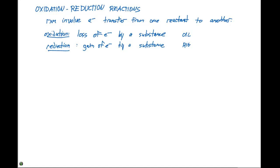We need some way to keep track of all of these electrons moving around in these reactions, so we come up with a term called oxidation numbers. Oxidation numbers are going to follow a set of rules so we can analyze these reactions more deeply. Electrons cannot be created or destroyed, so oxidation cannot occur without reduction, and reduction cannot occur without oxidation.